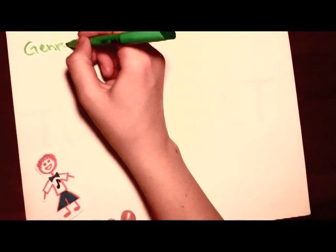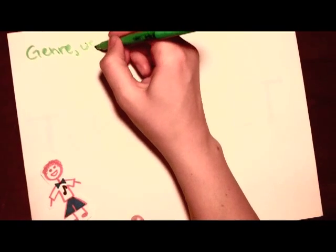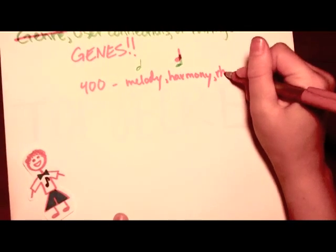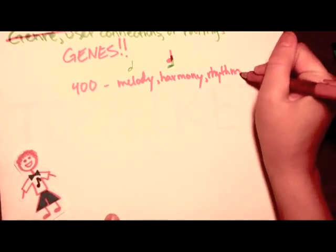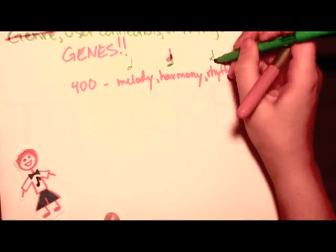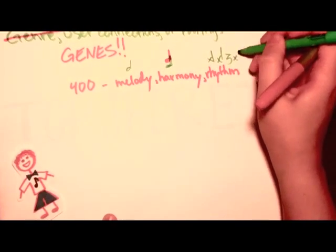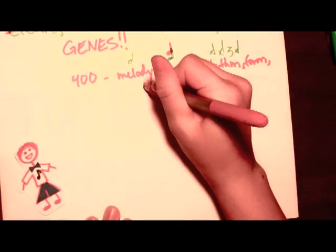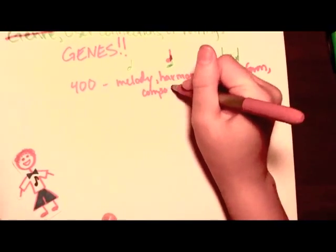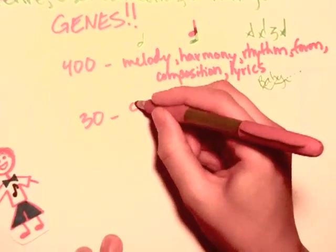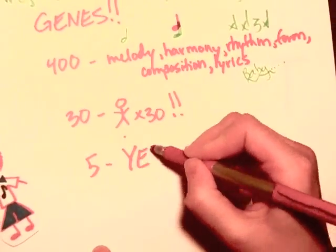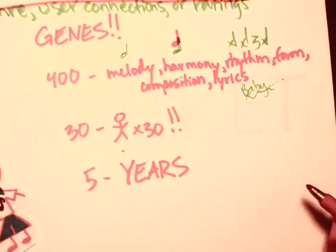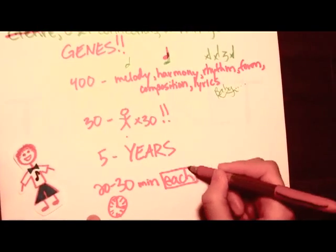Genre, user connections, or ratings are not used in the Music Genome Project or Pandora Radio. It uses genes instead. There are over 400 different attributes that are analyzed in order to classify the different genes. Melody, harmony, rhythm, form, composition, and lyrics are all just a few. It took 30 experts over 5 years to complete the work at the time it was started. This means it took about 20 to 30 minutes per song for each expert to analyze it.